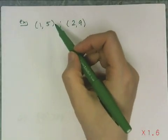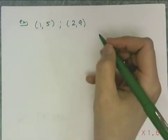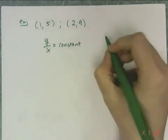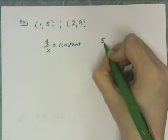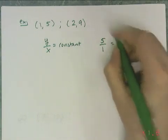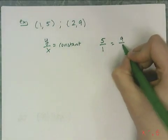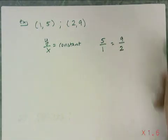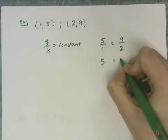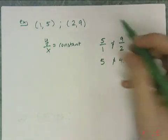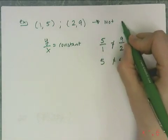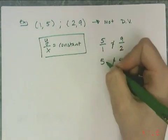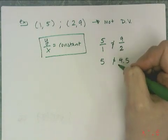Do the points (1, 5) and (2, 9) form a directly proportional relationship? I'm checking to see if y over x is constant. If there is a direct variation between x and y, then 5 over 1 should equal 9 over 2. But 5 over 1 equals 5, and 9 over 2 equals 4.5. These are obviously not equal, so these two points are not directly proportional and are not part of a direct variation.